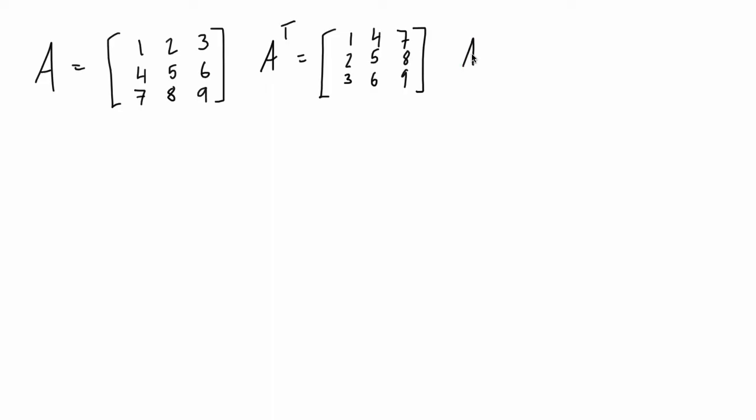Now if we take the transpose of the transpose, so if we have the transpose of a transpose, well we're going to repeat the process again. So we can take, let's say that we'll take the rows and we'll write them as the columns. So row 1 is 1, 4, 7. So we write column 1 as 1, 4, 7. Row 2 is 2, 5, 8. So column 2 is 2, 5, 8. And then row 3 is 3, 6, 9. So column 3 is 3, 6, 9. And when we look at this, we get this matrix. It's 1, 2, 3, 4, 5, 6, 7, 8, 9. And that is exactly what we started with at the beginning for matrix A. So A transpose, if you take the transpose of a matrix and then transpose it again, you get the original matrix that you started with.